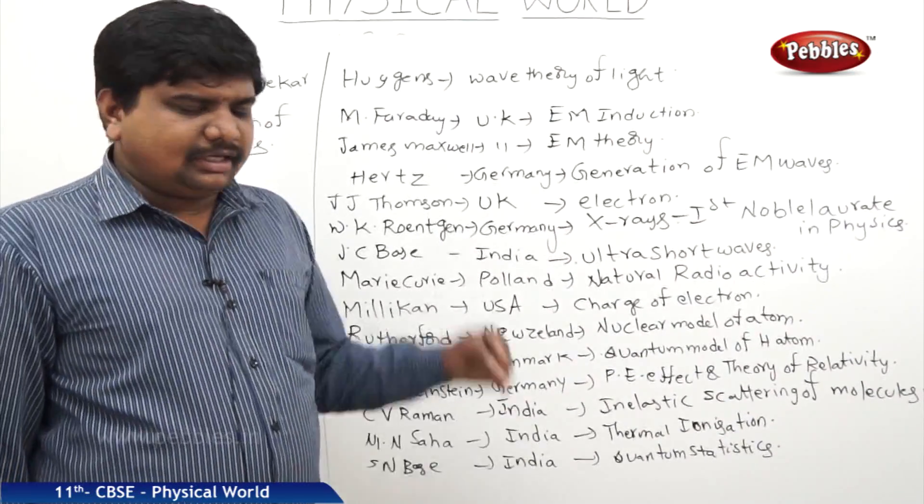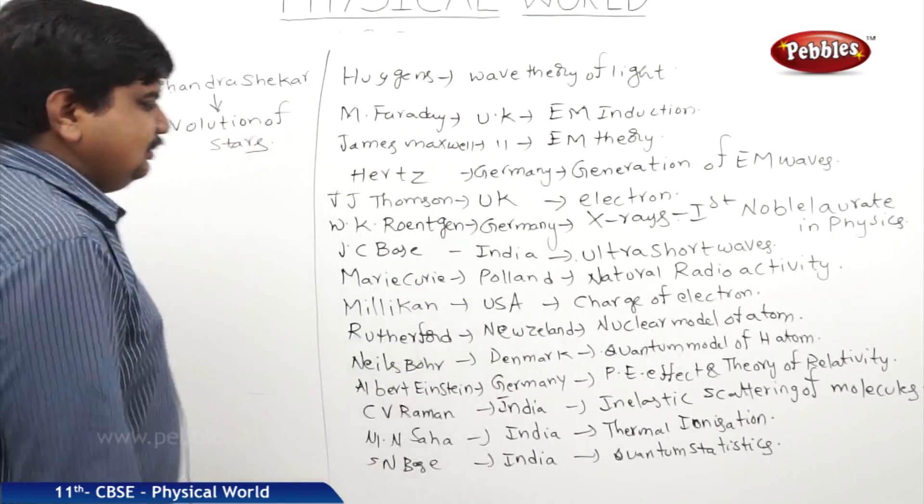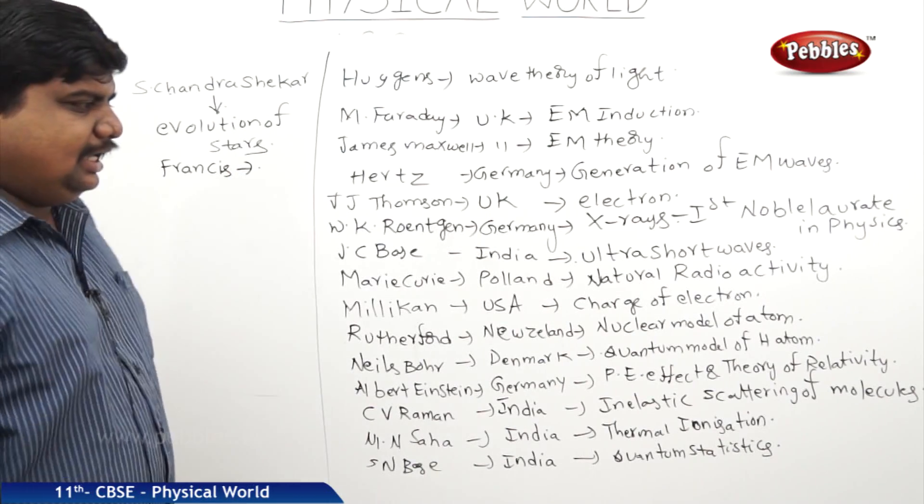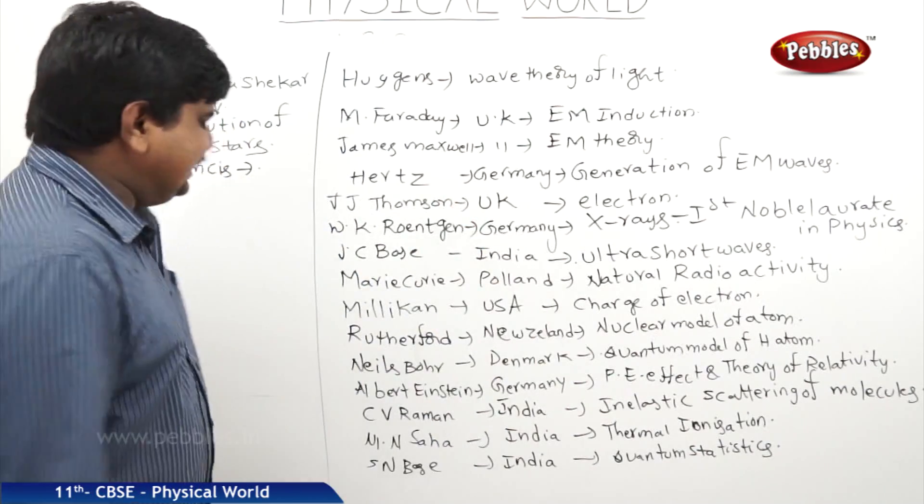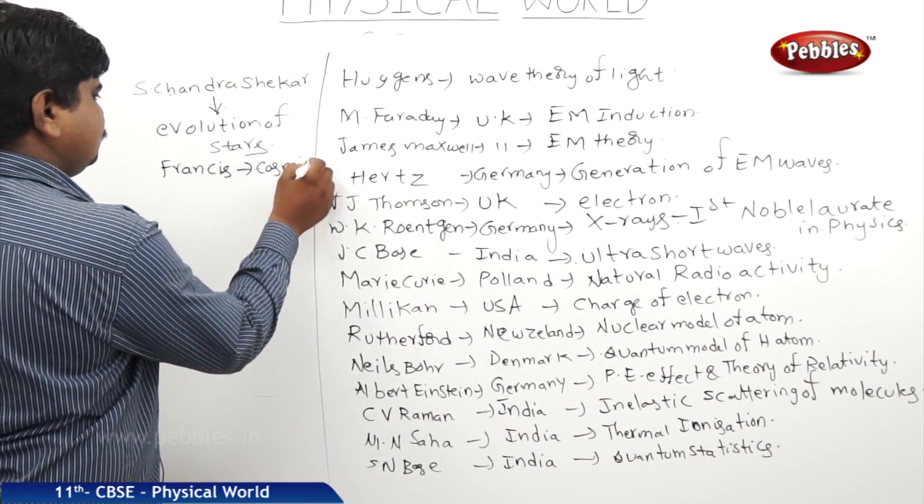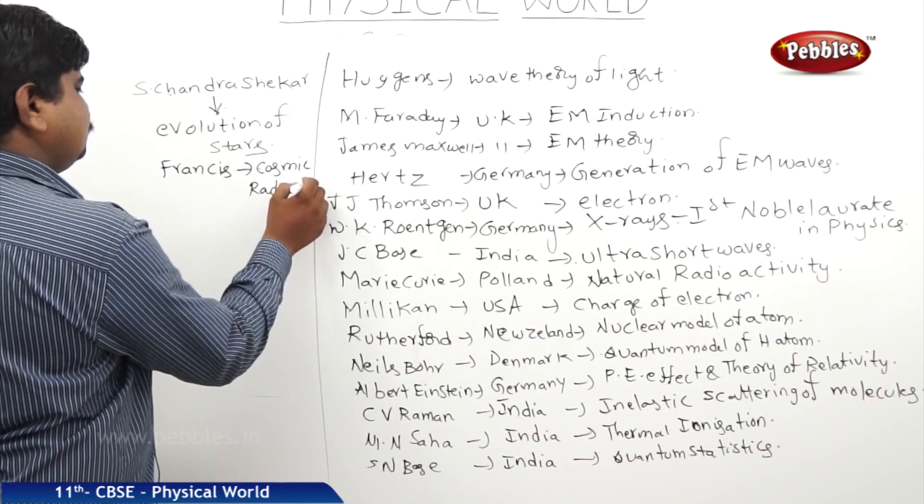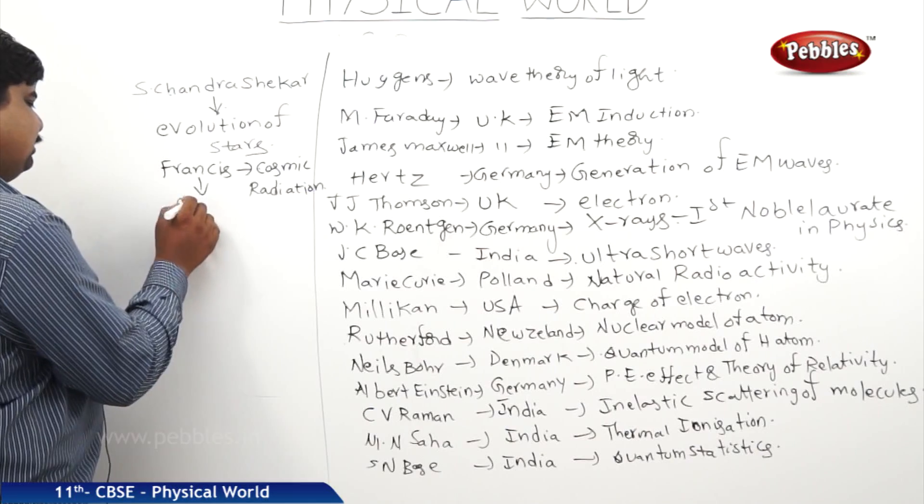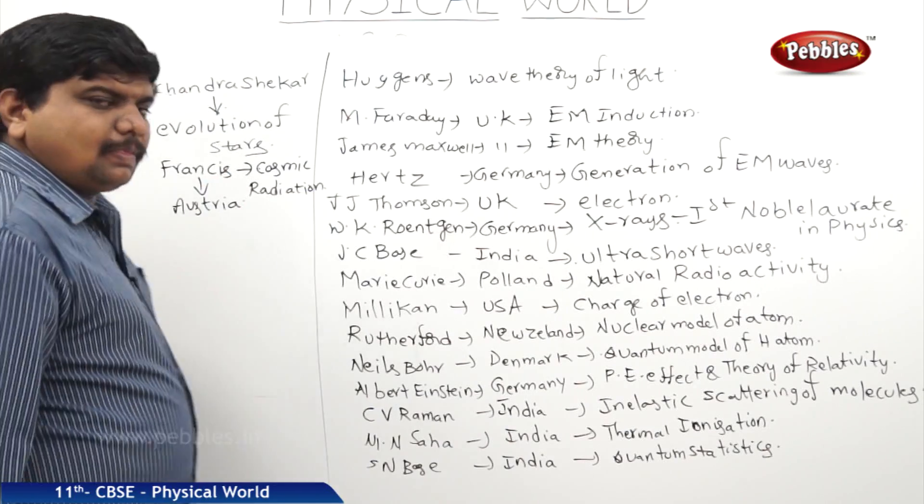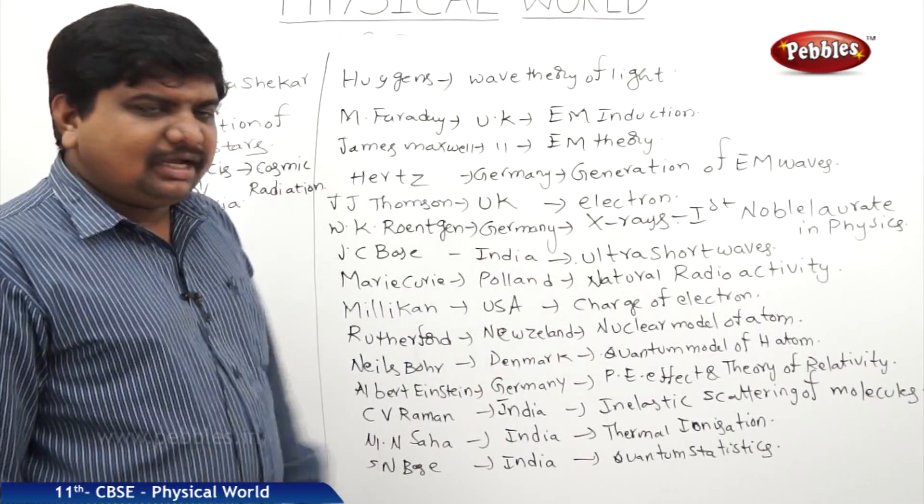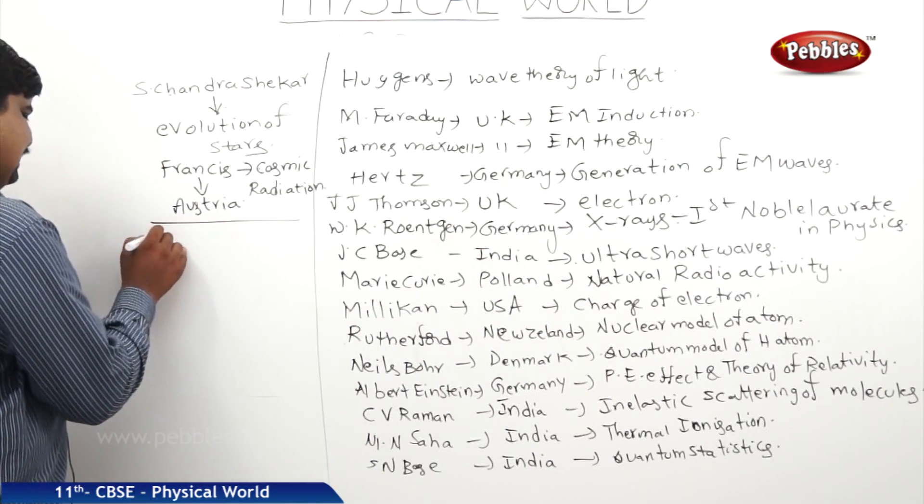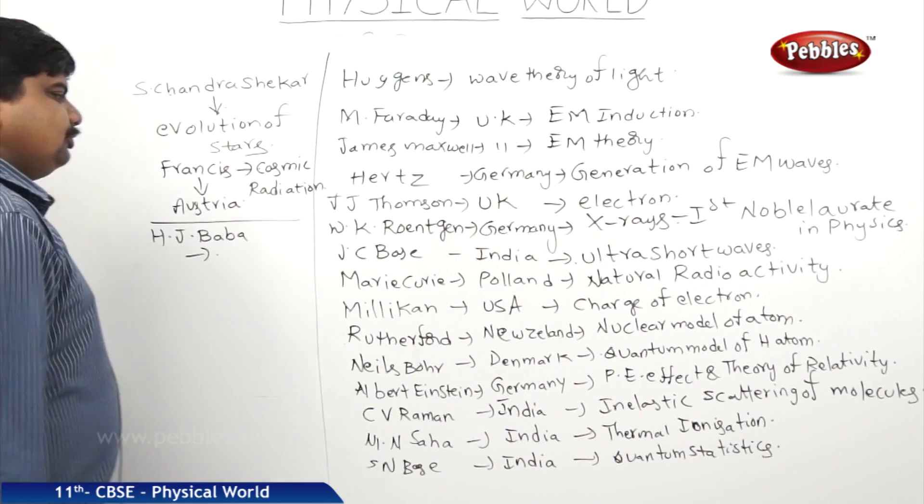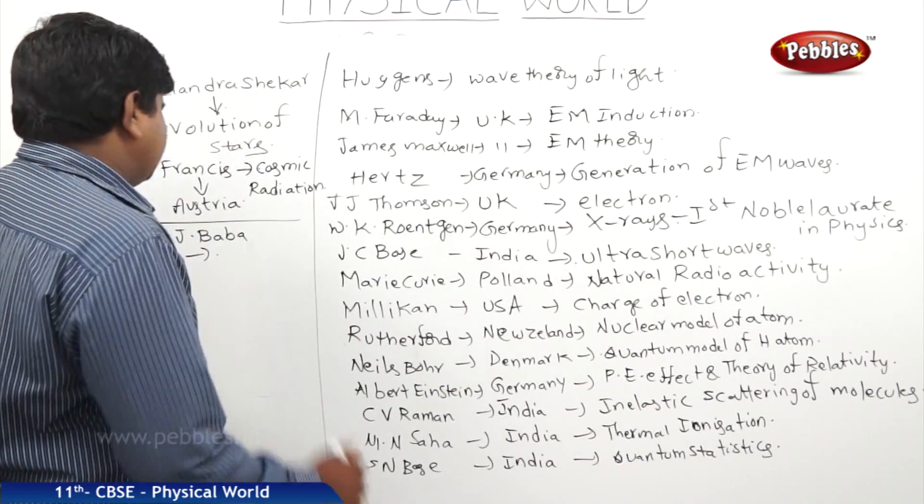The next great scientist was Francis Hess. He discovered the cosmic radiation. Francis is from Austria, which is near to Germany. The next great scientist was H.J. Bhabha, nothing but Homi Jahangir Bhabha from Bombay, India. He discovered the cascade nature of cosmic radiation.